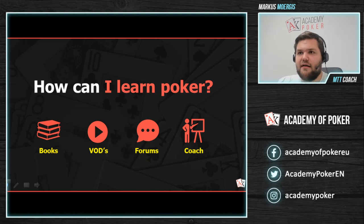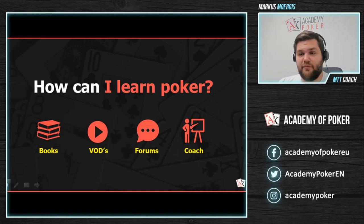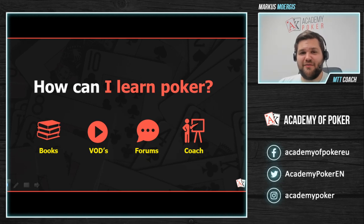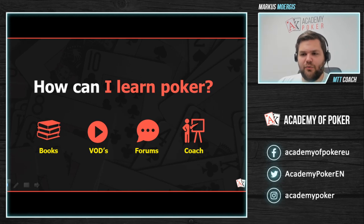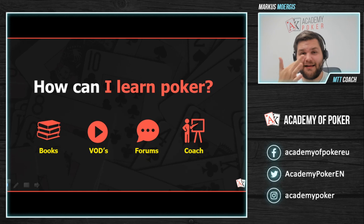Chris Moorman's latest book is a good recommendation — he's won what I believe is the most triple crowns online, meaning he won three tournaments in one week on three different poker sites. To start, you can also go with Super System or books from Dan Harrington, which have aged pretty well as a solid foundation.